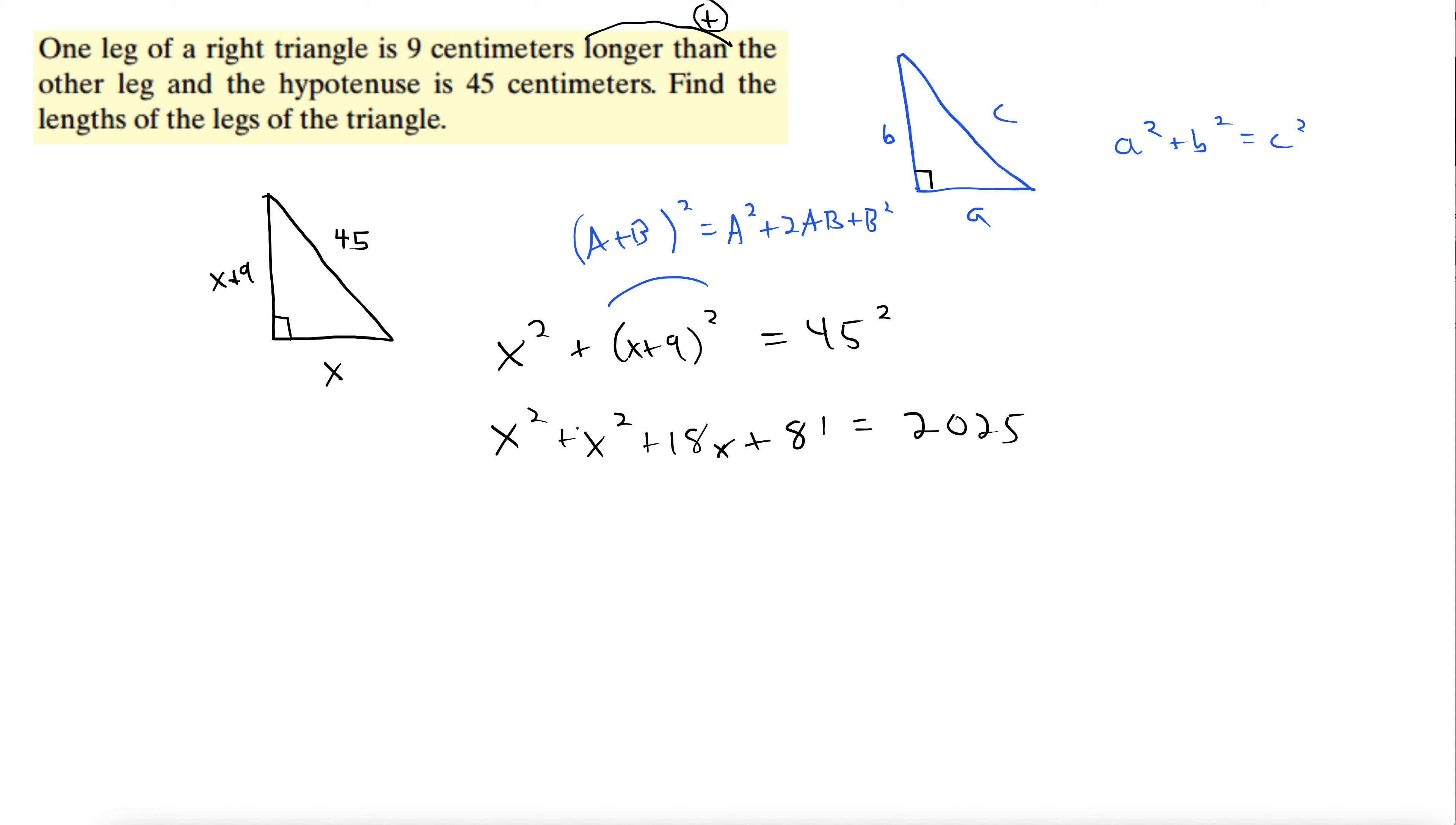Now anytime you have an x squared on one side, you want to have 0 on the other side of the equation. Things with x squared in them like to be set equal to 0. So let's do that. So we have 2x squared plus 18x. I'm going to subtract 2025 from both sides. That gives us negative 1944 equals 0.